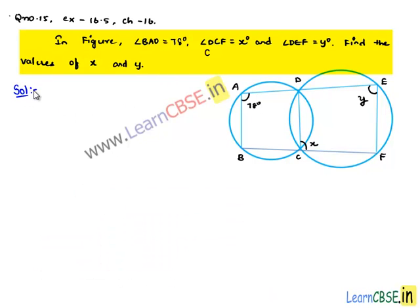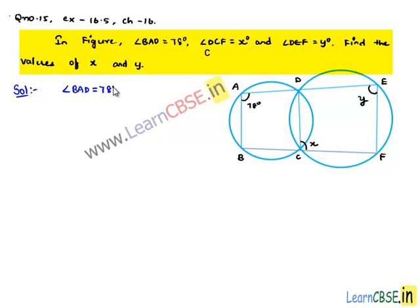Now moving on to the solution. From the figure, the given information is: angle BAD is equal to 78 degrees, angle DCF is equal to x degrees, and angle DEF is equal to y degrees.